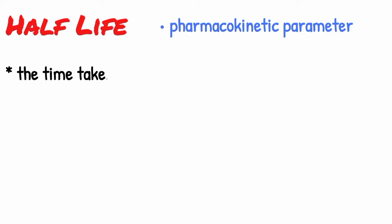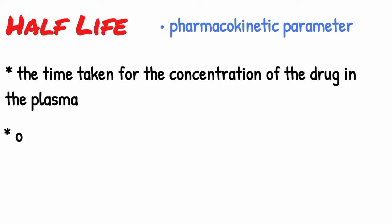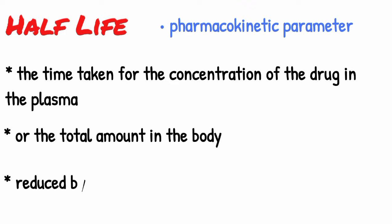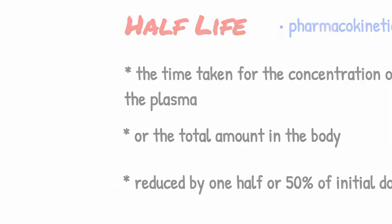Half-life of a drug is basically a pharmacokinetic parameter. It is the time taken for the concentration of a drug in the plasma, or the total amount in the body, to be reduced by one half or 50 percent of the initial dose.